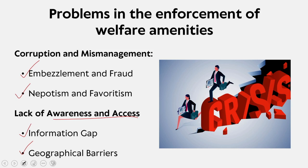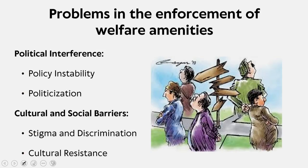This is also emerging as one of the critical problems in the enforcement of welfare amenities. When you look into political interference, there is policy instability—frequent changes in policies and priorities which can disrupt ongoing welfare programs. Politicization is different from policy instability; politicization is where welfare services may be used as a political tool, for vote bank politics, leading to biased or uneven distribution, which creates a big problem in the enforcement of welfare amenities.